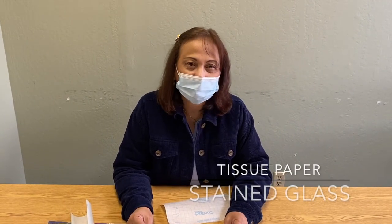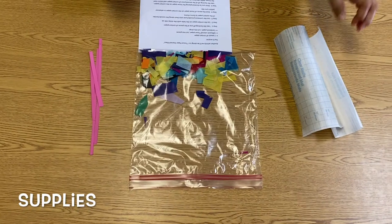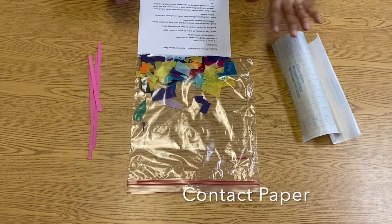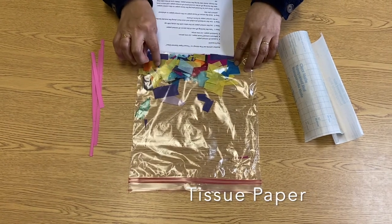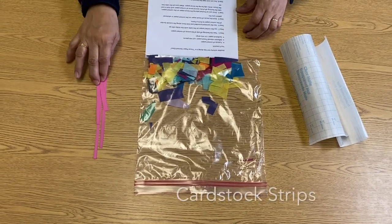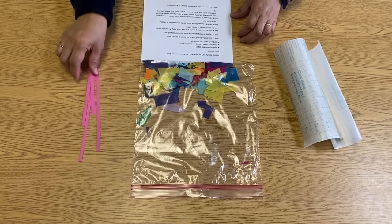Another activity that we'll be doing is a tissue paper stained glass. You'll receive two pieces of contact paper, different colored tissue paper cut into pieces, and cardstock paper cut into strips.